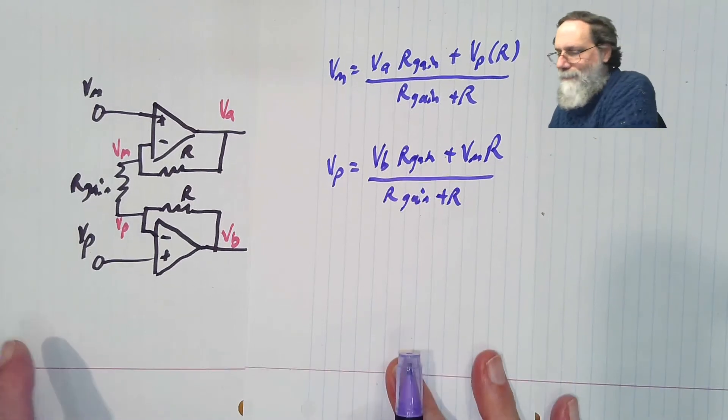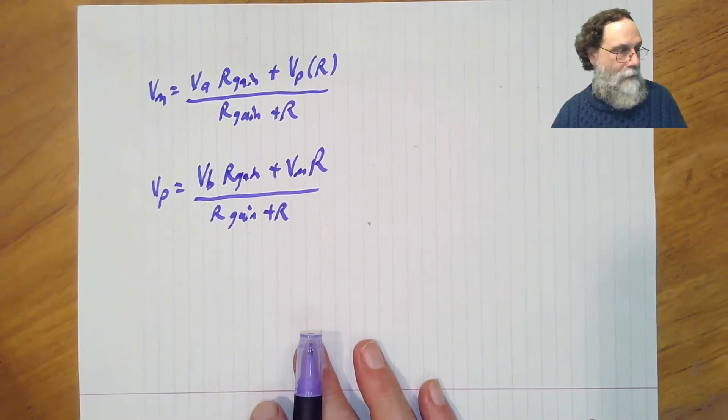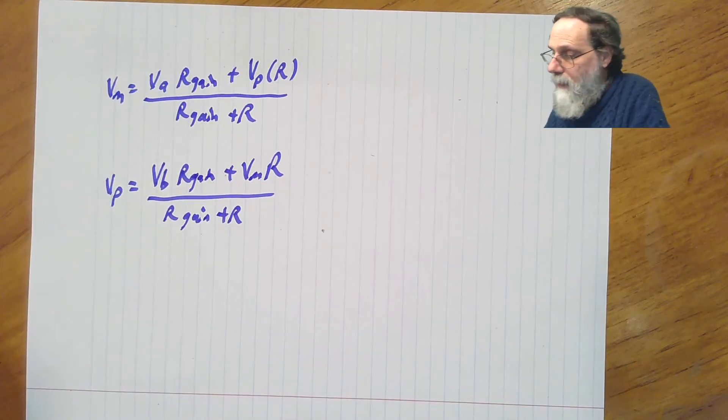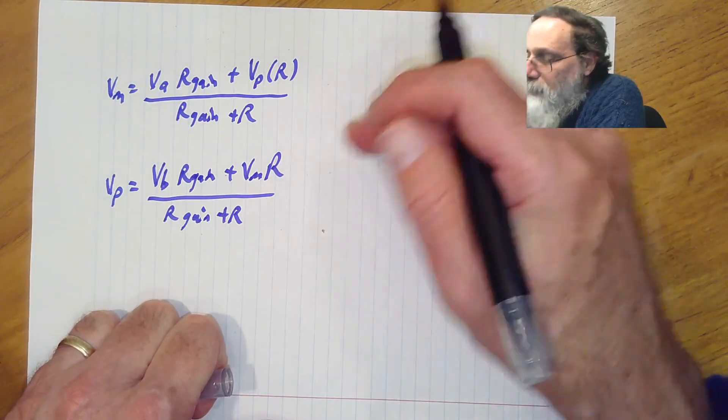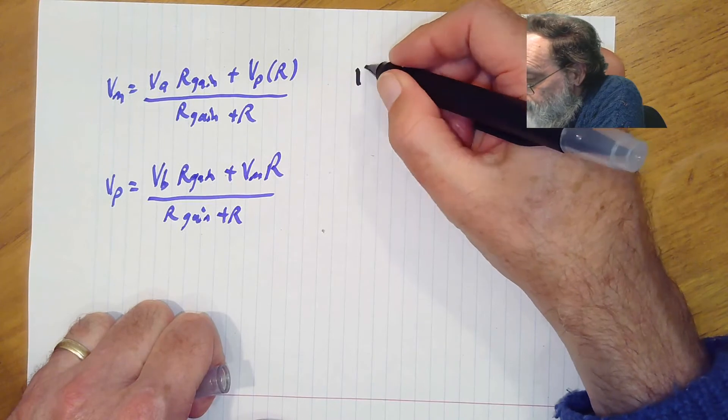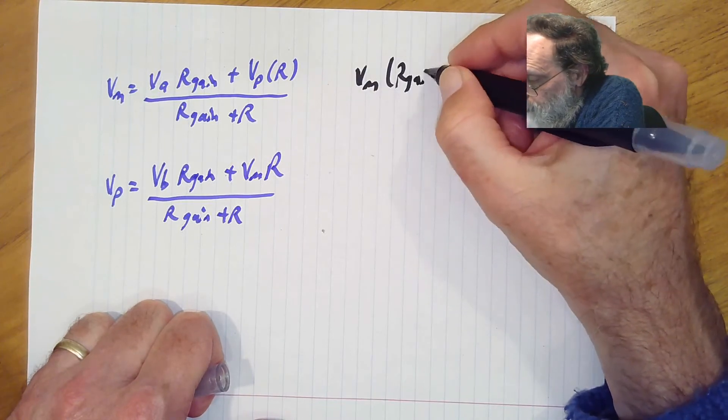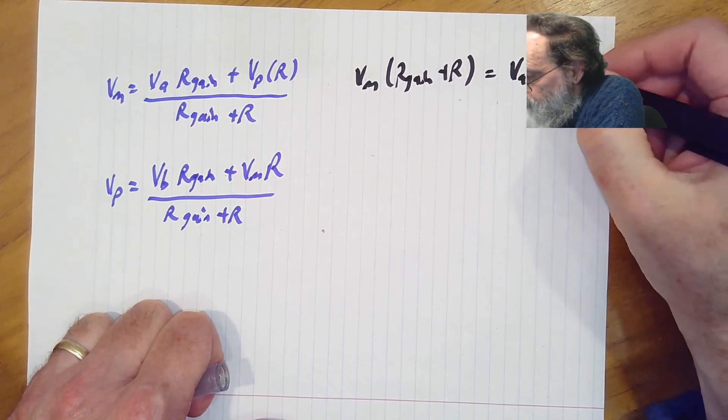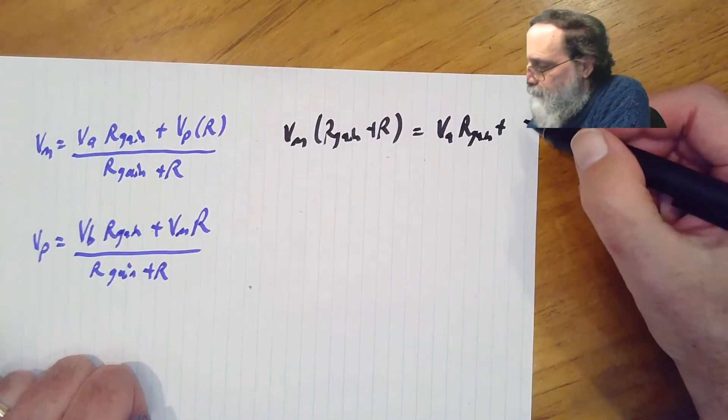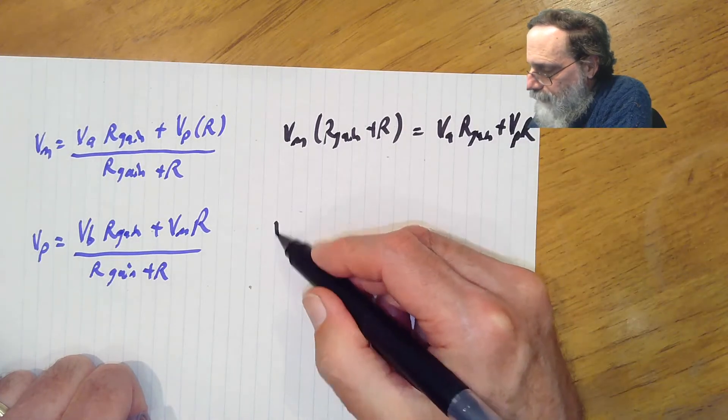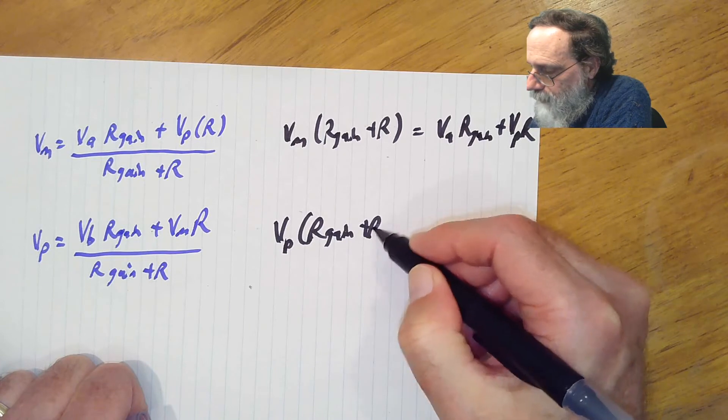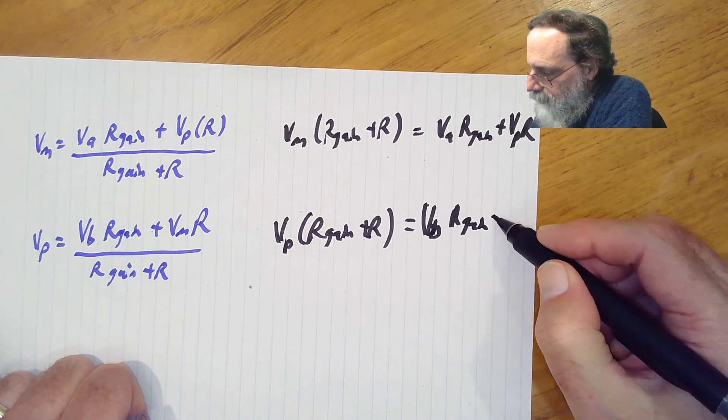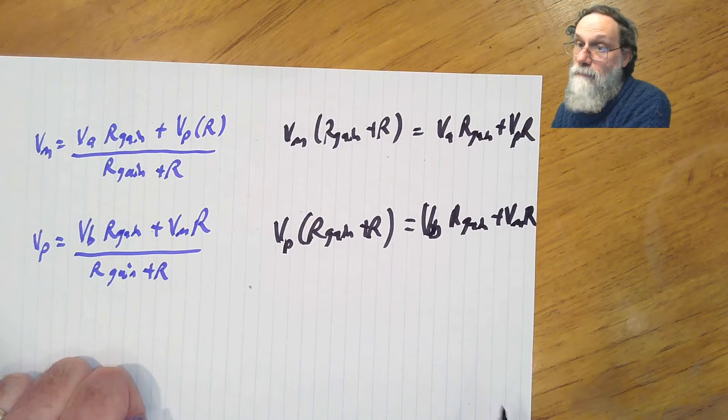Vm is Va times R gain plus Vp times R over R gain plus R. Vp on the bottom is Vb times R gain plus Vm times R over R gain plus R. That's not quite in the form we want, because here we're talking about what's Vm and Vp, but we wanted Va and Vb. So we can rearrange this a little bit.